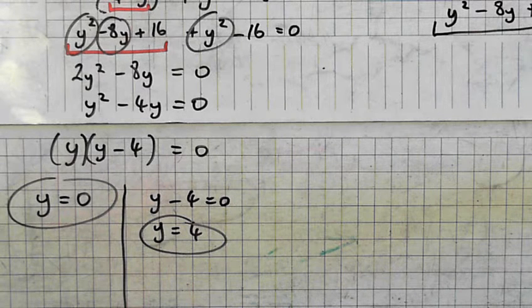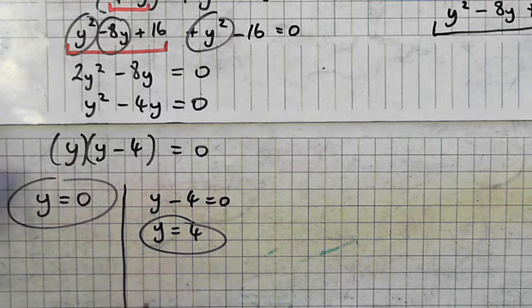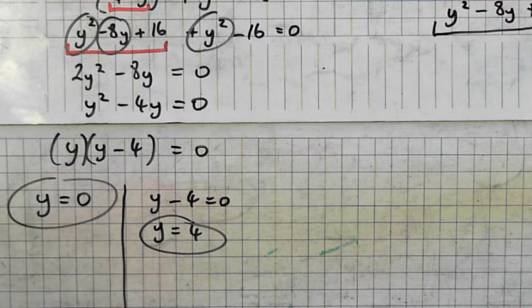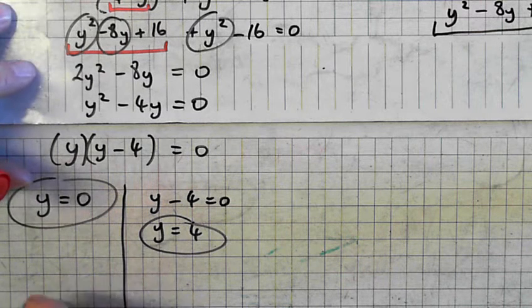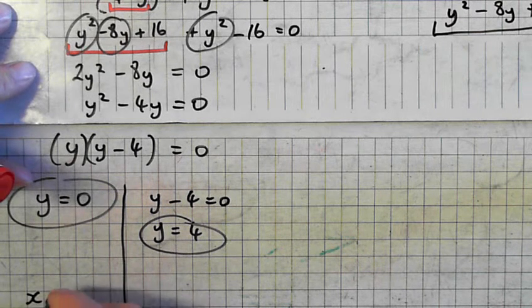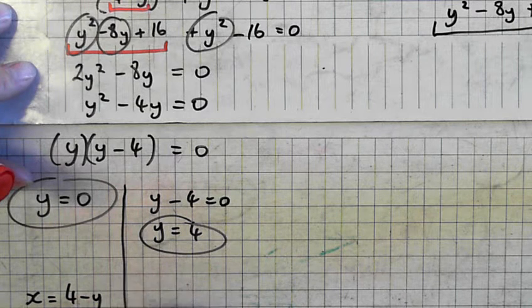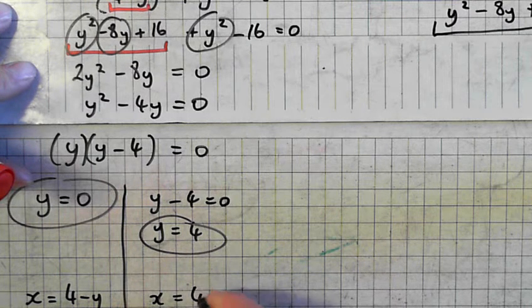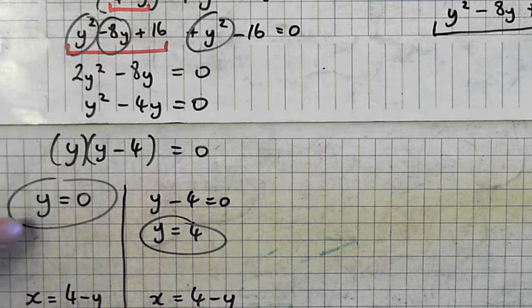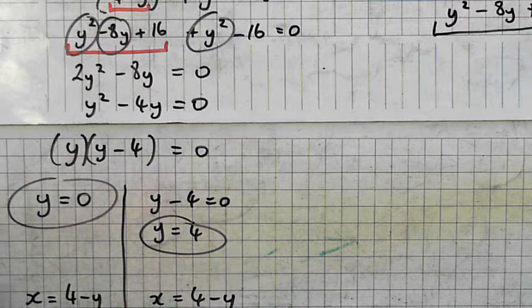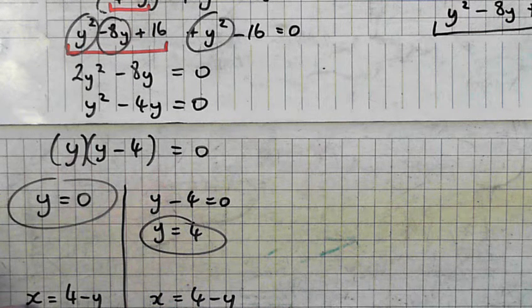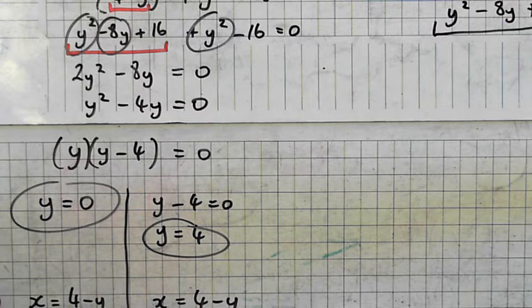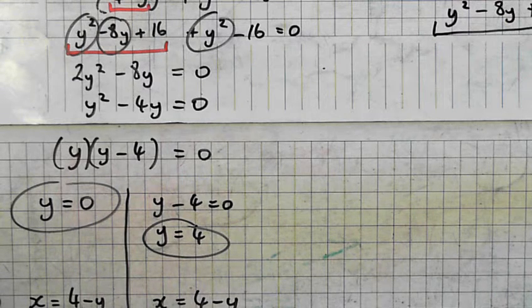So that's step 2 then. And step 3, go back and get your rearranged line equation. So my rearranged line equation was that, x is equal to 4 minus y. So put in your y value. 4 minus 0 is 4.